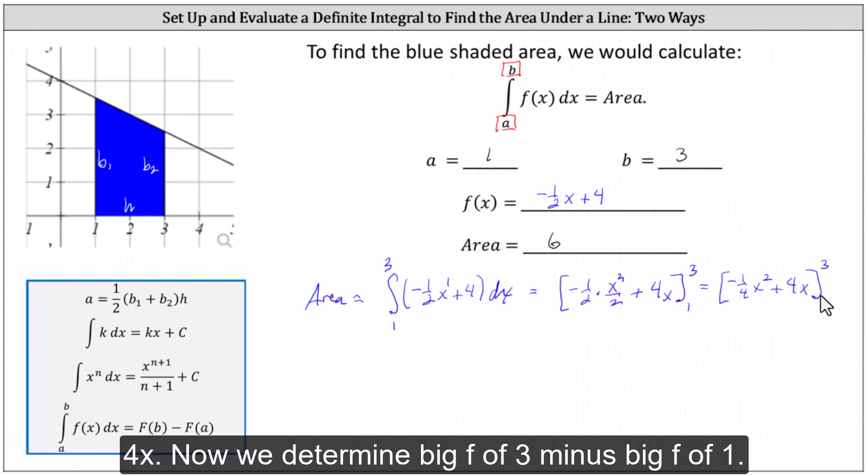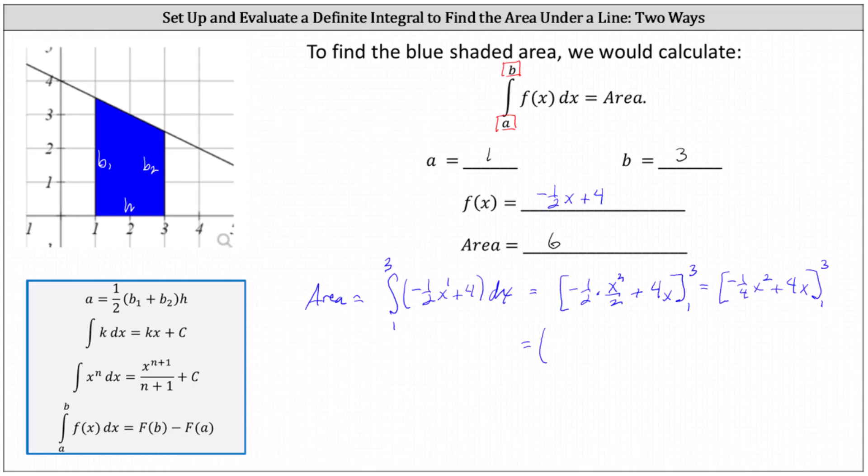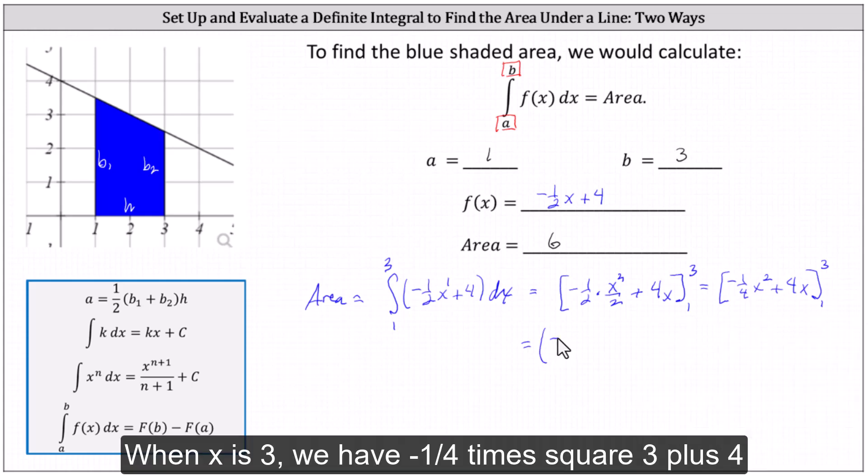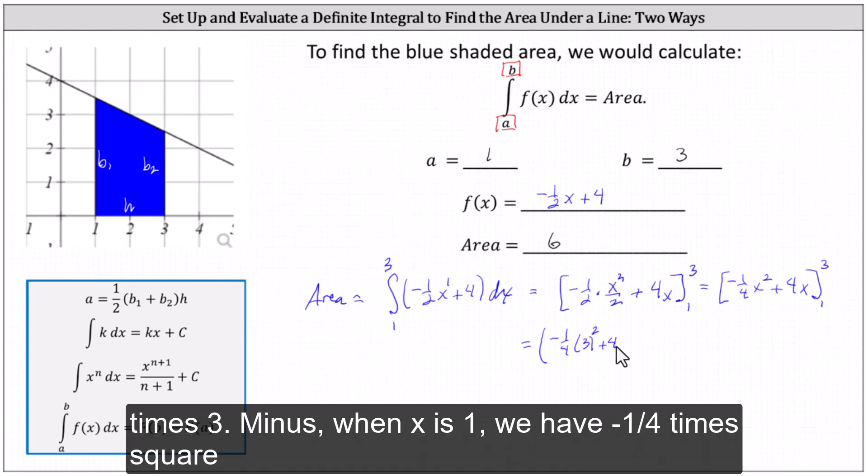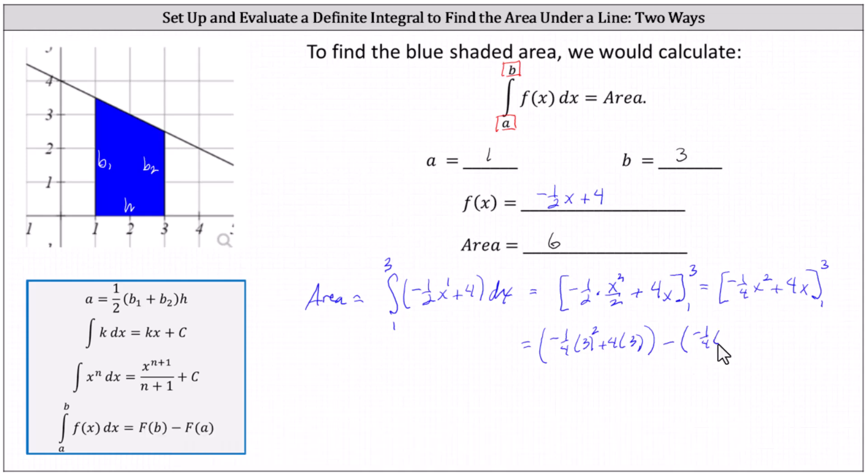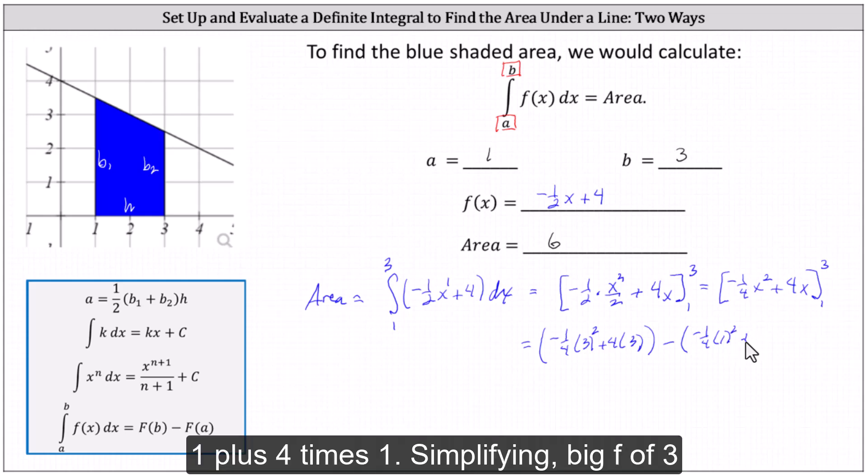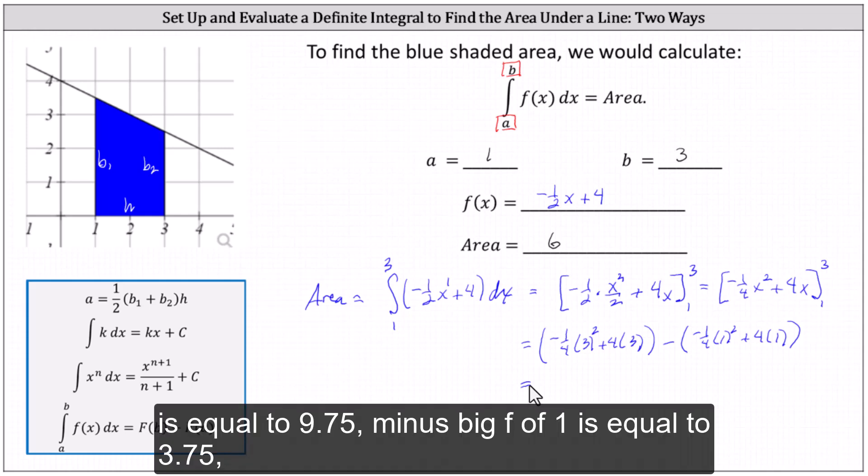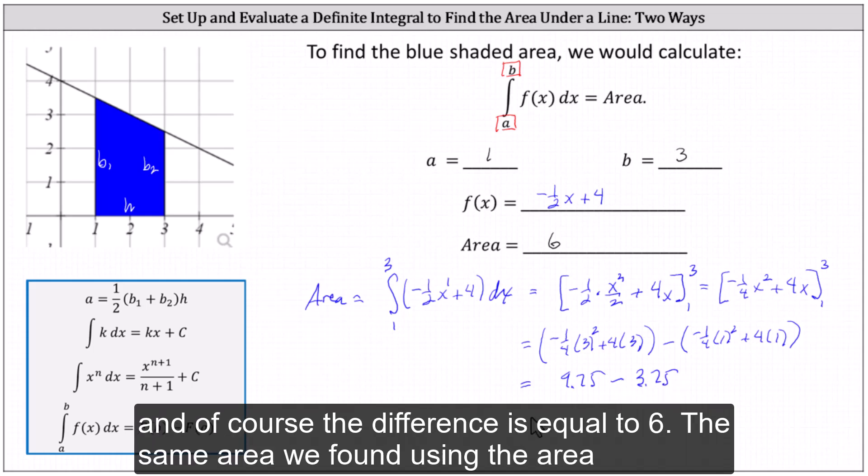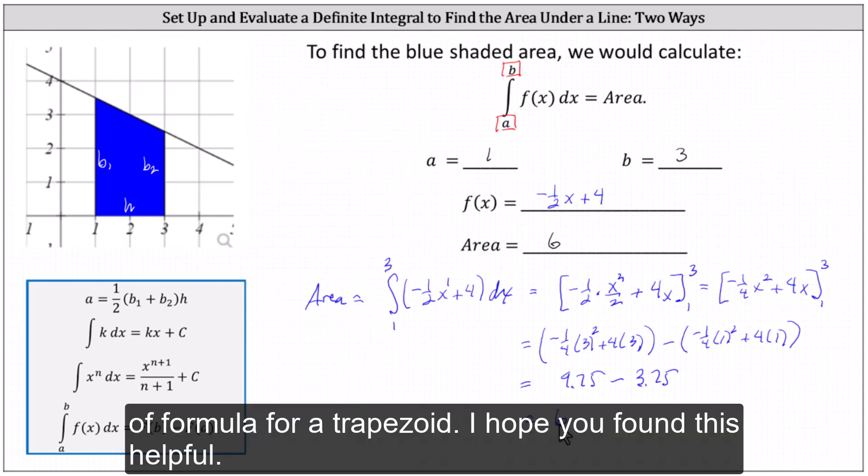Now we determine big F of three minus big F of one. We have negative one-fourth times the square of three plus four times three minus, when x is one, we have negative one-fourth times the square of one plus four times one. Simplifying, big F of three is equal to 9.75 minus big F of one is equal to 3.75. And of course the difference is equal to six, the same area we found using the area formula for a trapezoid.